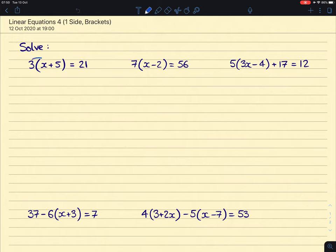This 3 before this first pair of brackets, everything inside that bracket has to get multiplied by 3. So we end up with 3x plus 15 equals 21.